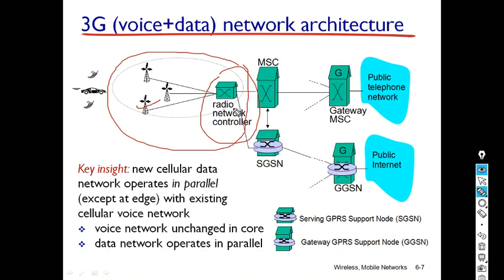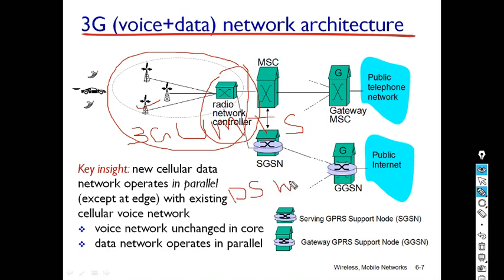The Radio Network Controller is also called the UMTS 3G BTS. The radio access network controller uses a technology called DS-WCDMA — Direct Sequence Wideband CDMA — which provides multiple frequencies. This is the technology used by the radio network controller, and in this way our 3G architecture works.